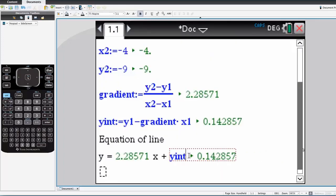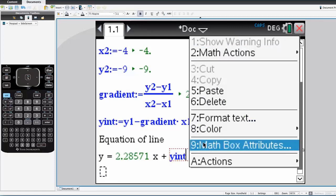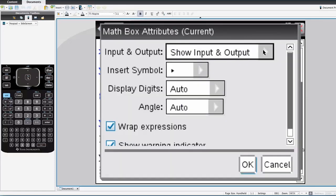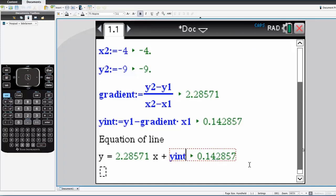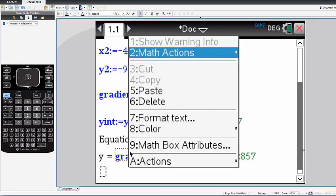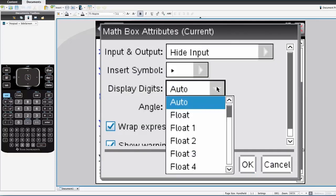And similarly for the y-intercept, we'll make sure that it's hiding the input there. And that's pretty much our final calculations that we need. And we might also decide that we don't need all that extra precision. So let's change this so it's fix 3.